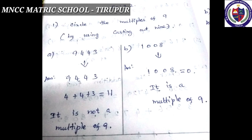Exercise 3.2. First: circle the multiples of 9 using the casting out 9s method. A) 9,443 — strike out 9, leaving 4, 4, 3. Add: 4 + 4 + 3 = 11 — it is not a multiple of 9. B) 1,008 — 1 + 8 = 9, so it is a multiple of 9.